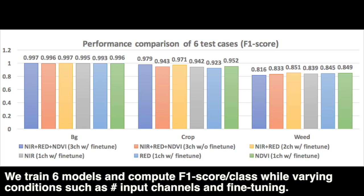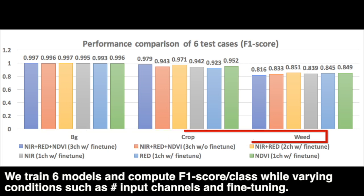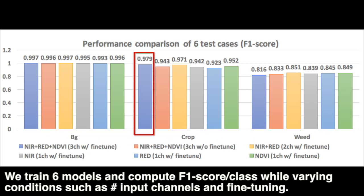90 testing images with ground truth are used for all model performance evaluations. We trained six models with variable conditions, such as the number of input channels and whether fine-tuning is performed or not. F1 score is computed for each class — background, crop, and weed. Overall, the six models achieved reasonably high accuracy, with the three-channel model in dark blue and the two-channel model in yellow slightly outperforming the others.